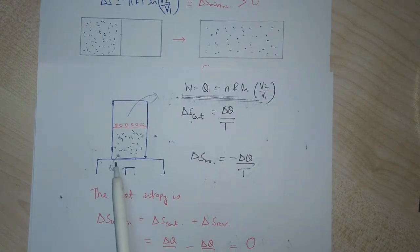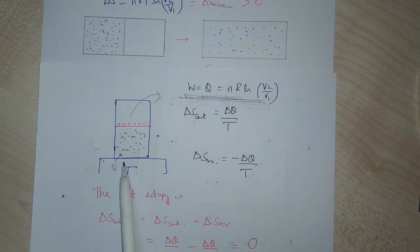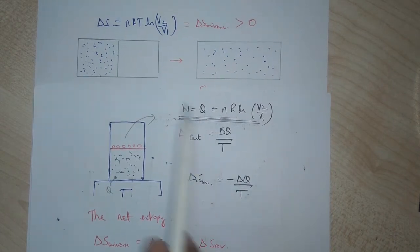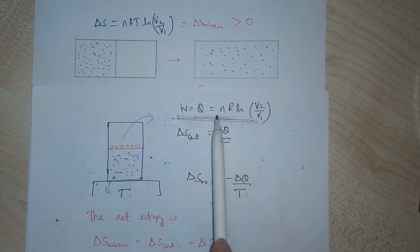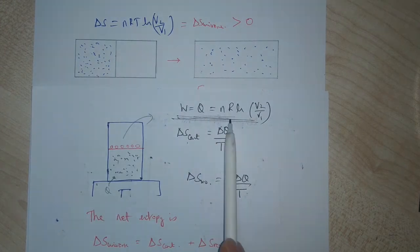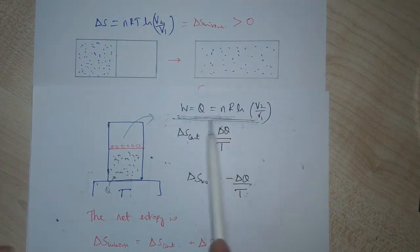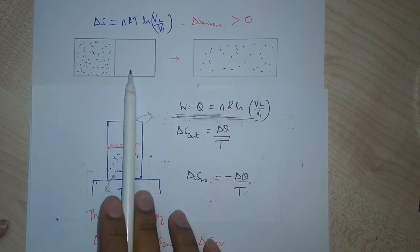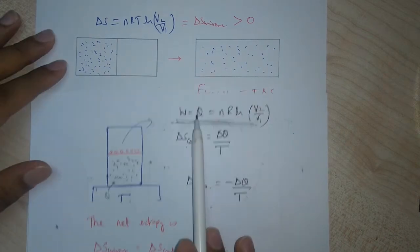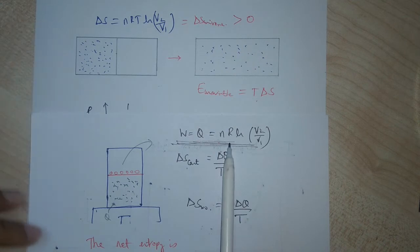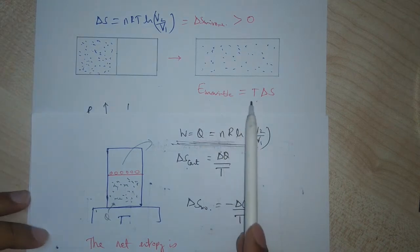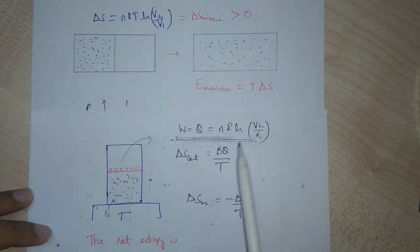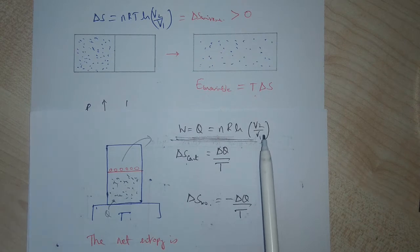In the isothermal expansion, work would have been done when the gas pushes the piston. But in free expansion, the gas can no longer do that same amount of work. This means that energy becomes unavailable when the gas expands freely. Using the first law of thermodynamics, this unavailable energy can be written as T times ΔS.